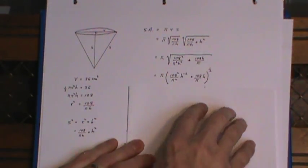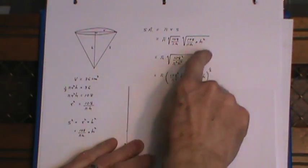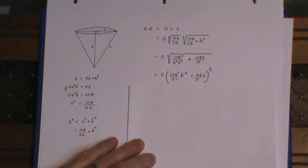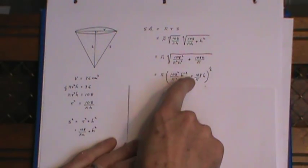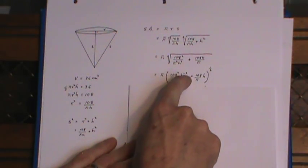I rewrote this. I wrote this to the half because I'm getting ready to take a derivative here. I also took this h squared on the bottom and wrote it as h to the negative 2.